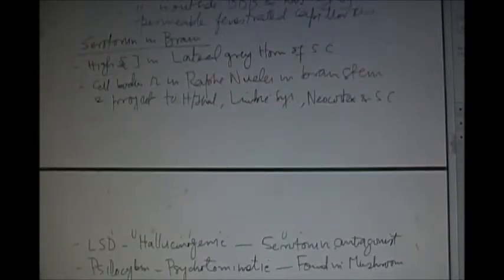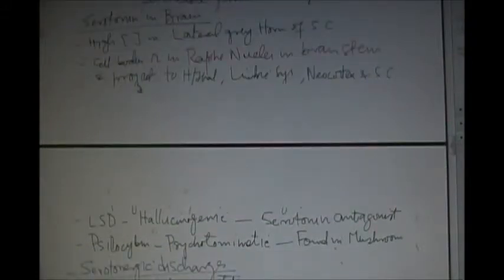The sites of serotonin in the brain. The high concentration of serotonin are found in the lateral gray horn of the spinal cord. Number two, the cell bodies are in raphe nuclei in brainstem that project to hypothalamus, limbic system, neocortex and to the spinal cord.